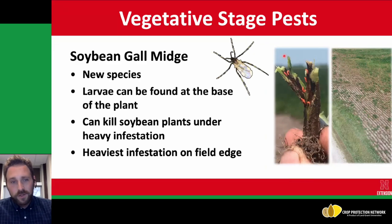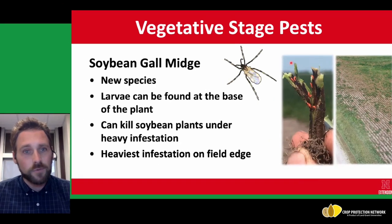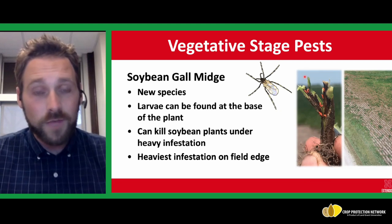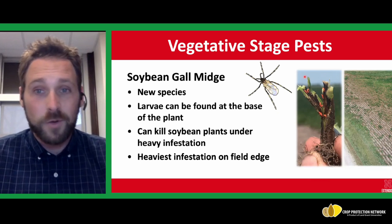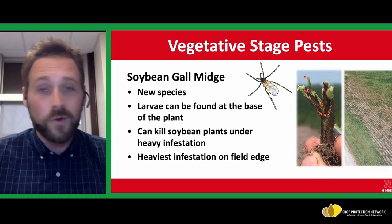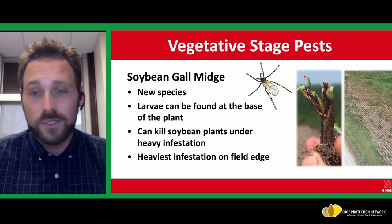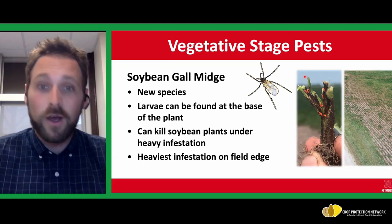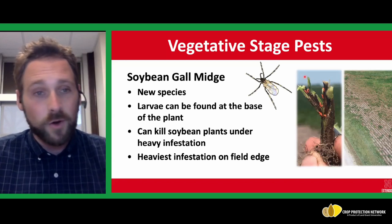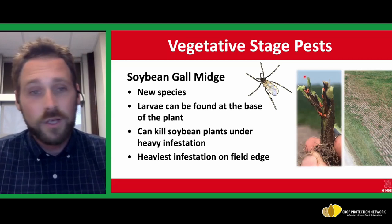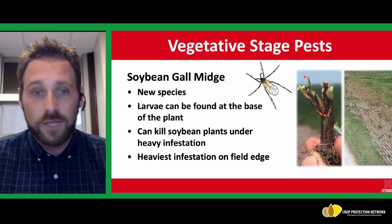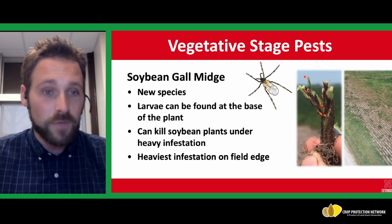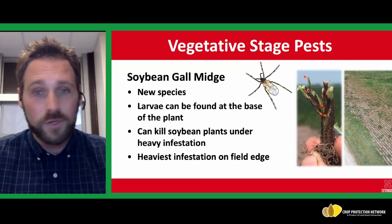The next one I'm going to spend a little more time on because this is actually a new species recently found in 2018 and described in 2019. Soybean gall midge, or Resiliella maxima, is the fly you see here in the image. They're quite small — about a quarter of an inch in size. You're unlikely to ever see the adults in the field unless you're part of our trapping network, which is about 36 fields across the United States, within the states where we have infestations: South Dakota, Minnesota, Iowa, Nebraska, and the tip of Missouri.